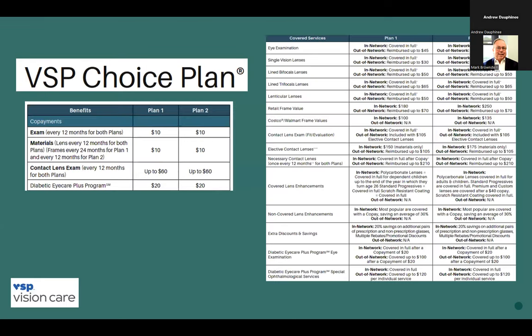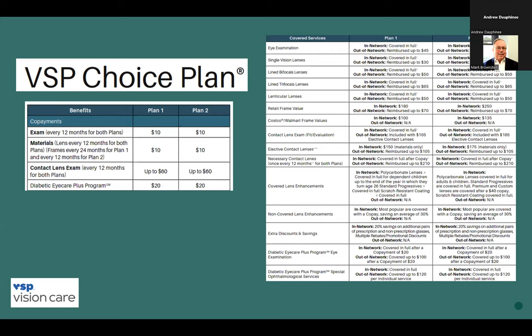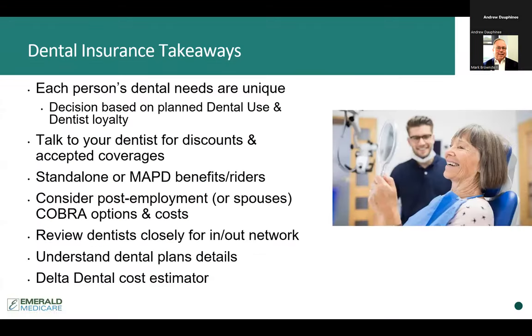VSP is one of the more common vision carriers. You can see a list of different enhancements and discounts available. It may not be about getting everything paid for — it may be about getting a discount. Monthly rates for a vision plan vary between plan one and plan two, and the difference lies in some of the more expensive coverage components. It's all about looking at the details of what you have.